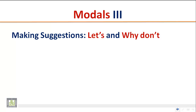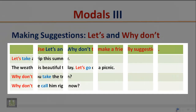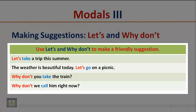Making suggestions: 'let's' and 'why don't'. Use 'let's' and 'why don't' to make a friendly suggestion. Examples: 'Let's take a trip this summer.' 'The weather is beautiful today — let's go on a picnic.' 'Why don't you take the train?' 'Why don't we call him right now?' The modal auxiliary in these examples is used to make a friendly suggestion.